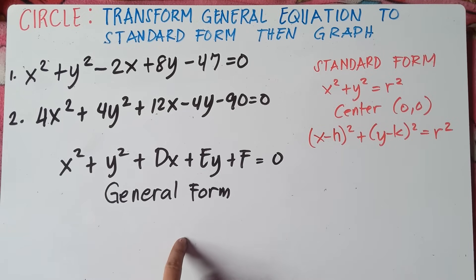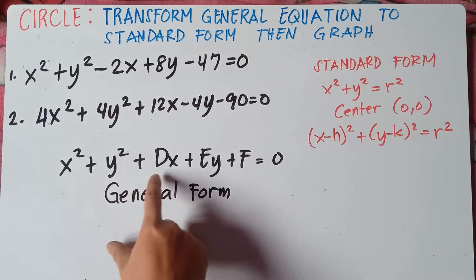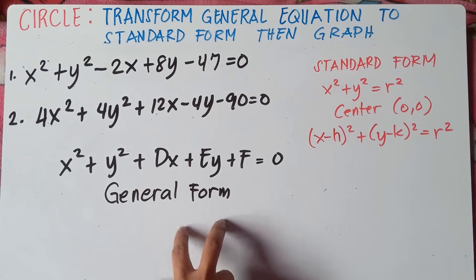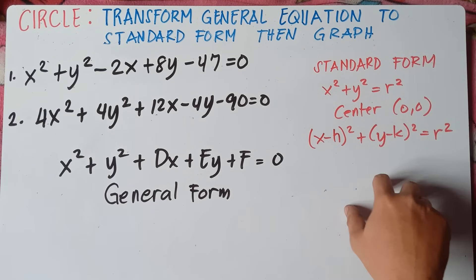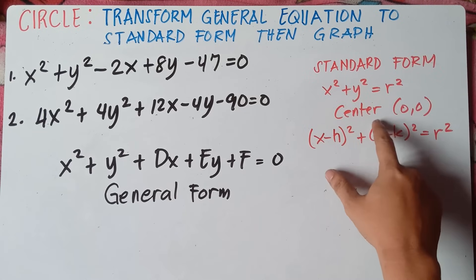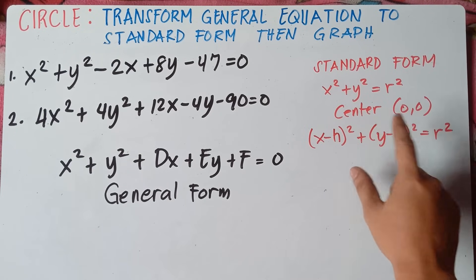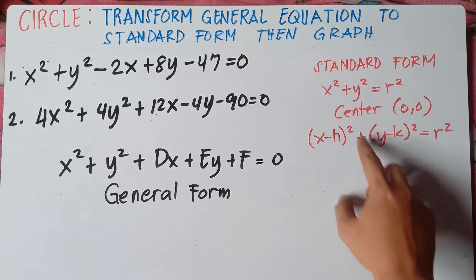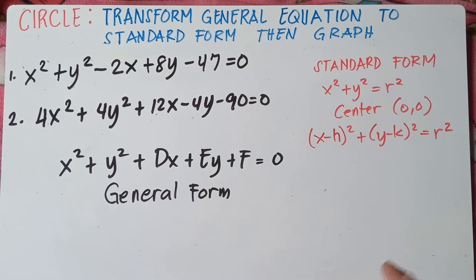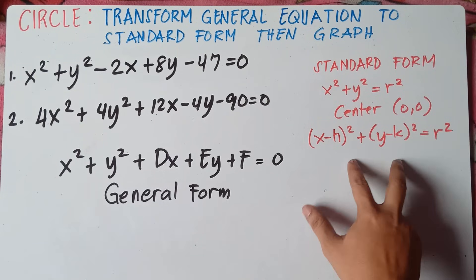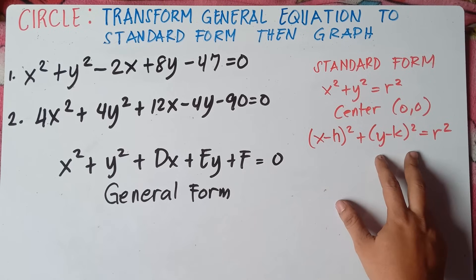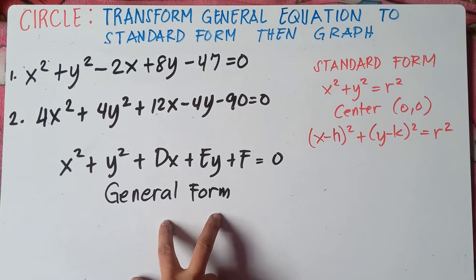Now this is the general form of a circle: x squared plus y squared plus dx plus ey plus f equals 0. And we transform this equation into standard form. The standard form of a circle is x squared plus y squared equals r squared if the center is at (0, 0), where h equals 0 and k equals 0. If we do have the value of h and k — for example h is 2 and k is 3 — then the equation is: quantity x minus h squared plus quantity y minus k squared equals r squared. So we transform the general form into this standard form.